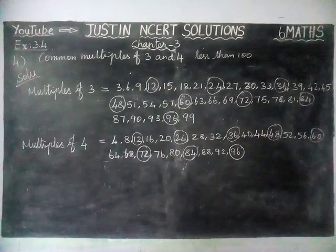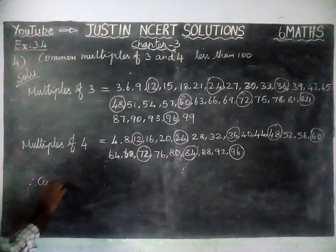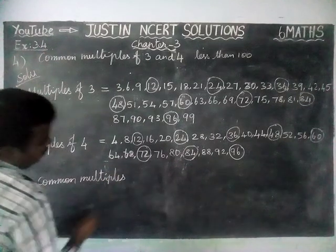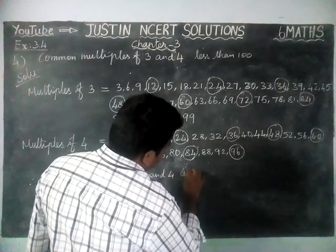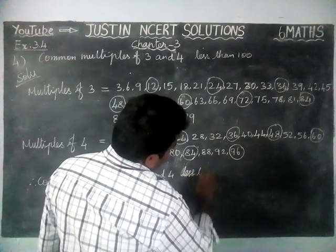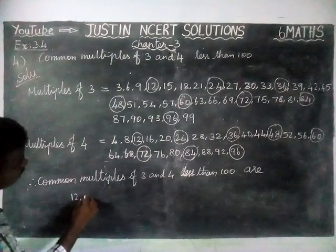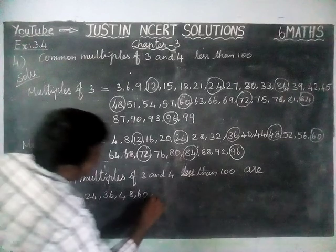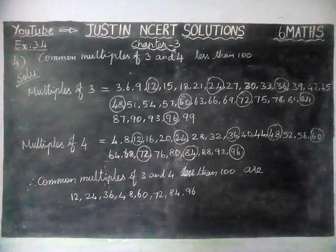Therefore, the common multiples of 3 and 4 less than 100 are: 12, 24, 36, 48, 60, 72, 84, and 96. So these are all the answers for the 4th question. Thank you students, kindly share this video with your friends and subscribe to our channel. Thank you.